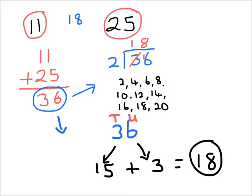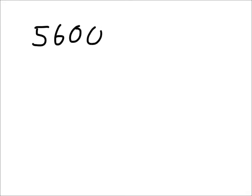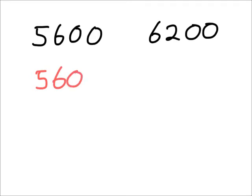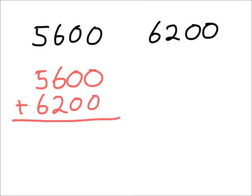Let's look at another example with a larger number to check that it works. This time we're given two much larger numbers: five thousand six hundred and six thousand two hundred. What number is exactly halfway between these two values? Step one, we're going to add the numbers. Five thousand six hundred add six thousand two hundred — a quick column addition — gives us eleven thousand eight hundred.